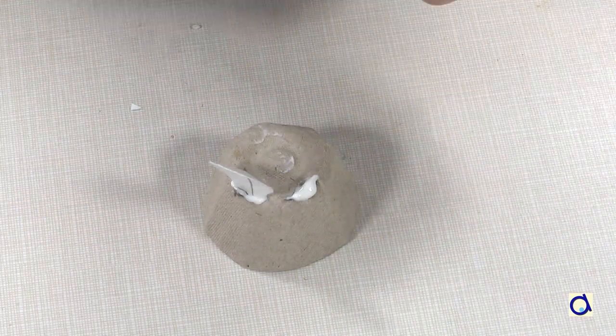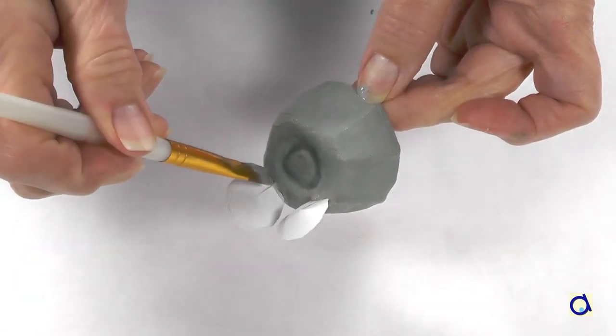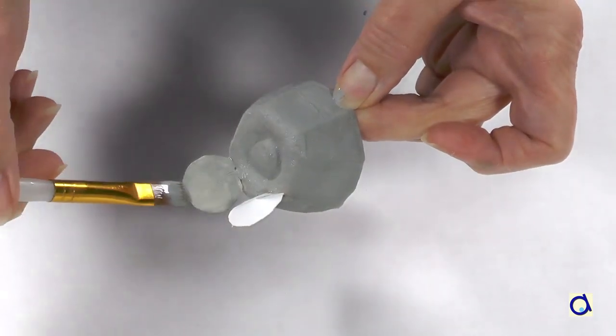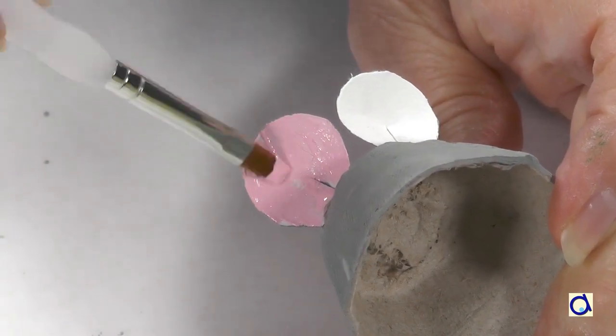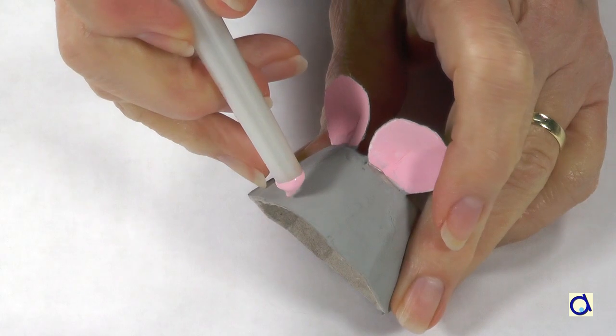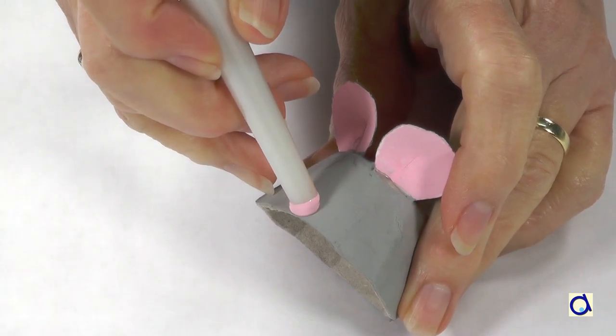Let the white glue dry completely. Paint the mouse. I chose to paint the mouse grey and the inside of the ears pink. Put a dot of pink paint with the back of a paintbrush to represent the mouse's nose.